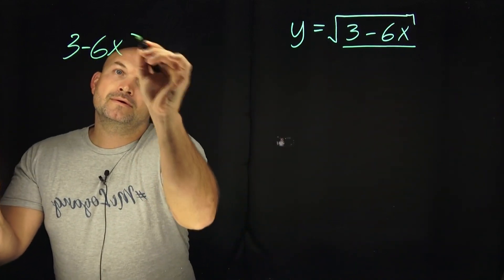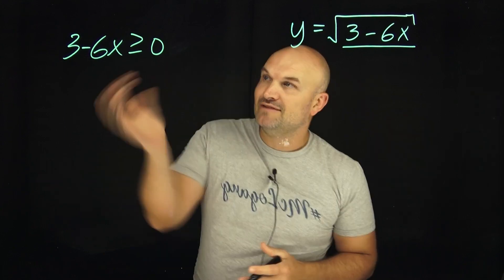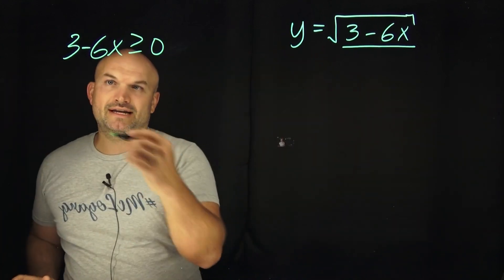So in this case, I'm going to have 3 minus 6x is greater or equal to zero. Now I can use my inverse operations to go and solve this inequality. In this case, there's a couple different ways you can go ahead and do this.